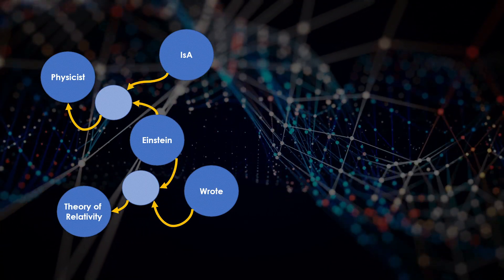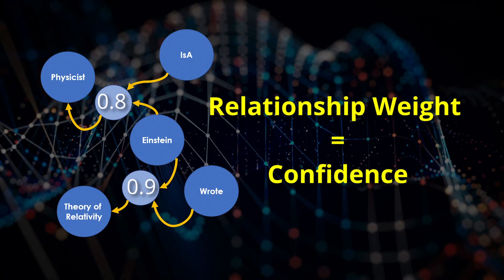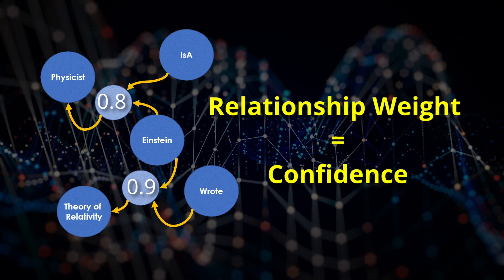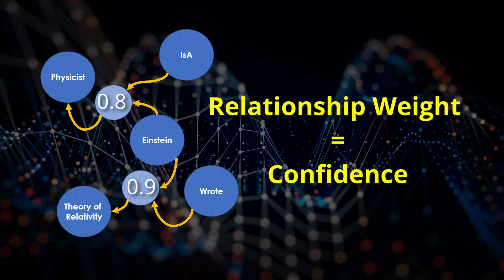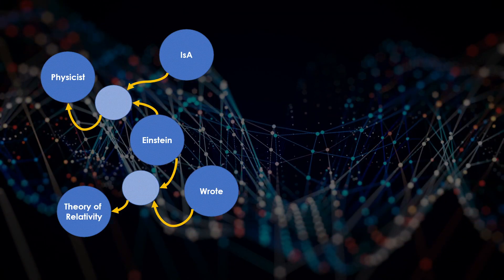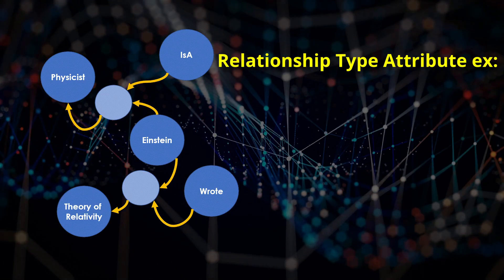Relationships also have weights. This represents the confidence that a relationship is true. When working with limited or erroneous data, this allows for choosing the most likely answers. Because they are nodes, relationship types can have attributes which enable powerful inferences.